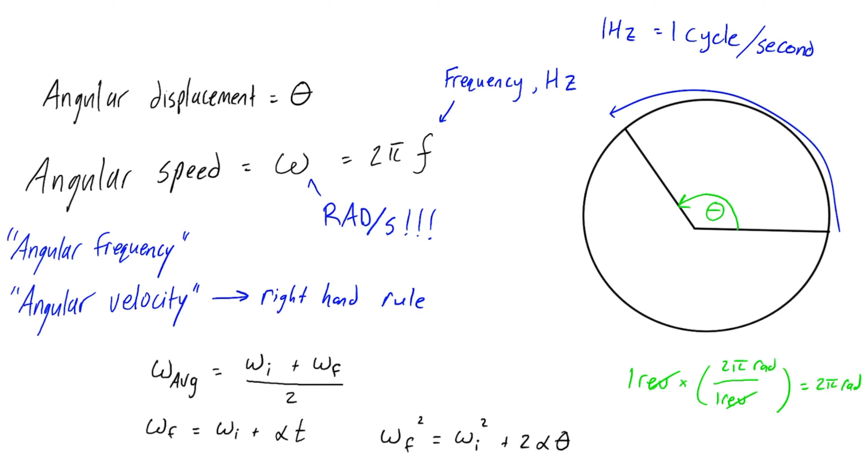So these are exactly synonymous to the linear versions. There's linear versions of these expressions if you just substitute theta for s and omega for v and alpha for a.